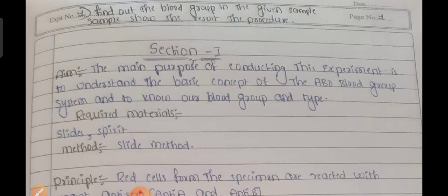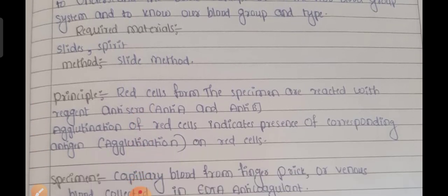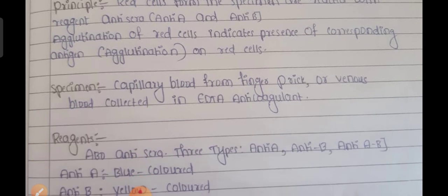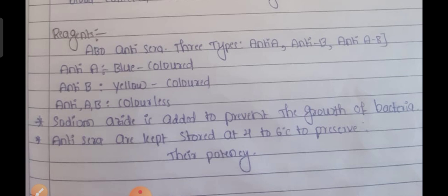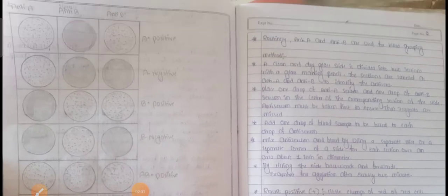First, Section 1: Find out the blood group in the given sample and show the results in the process. This is Section 1. It includes required materials, method, principle, specimen, and reagents.